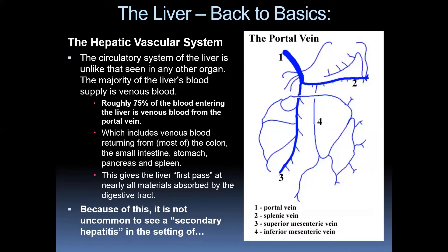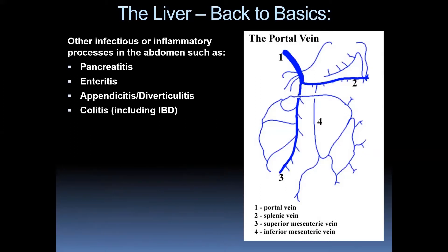The circulatory system of the liver is unlike that of any other organ. The majority of the liver's blood supply is venous blood — specifically about 75% is venous blood from the portal vein, including blood returning from most of the colon, small intestine, stomach, pancreas, and spleen. This gives the liver first pass at nearly all materials absorbed by the digestive tract. Because of this, it's not uncommon to see secondary hepatitis in the setting of pancreatitis, enteritis, appendicitis, diverticulitis, colitis, or any other inflammatory process in the abdomen.